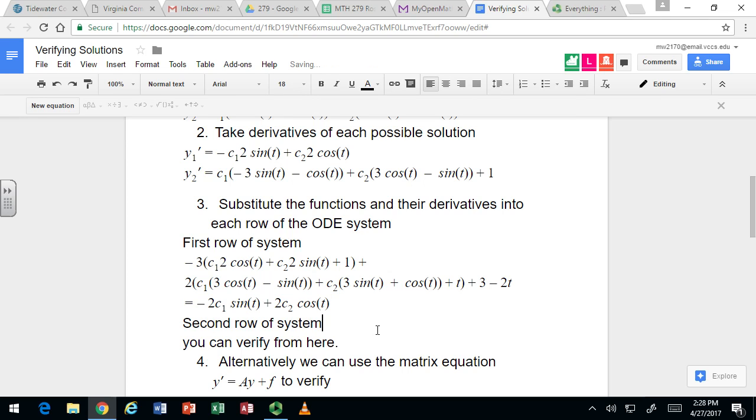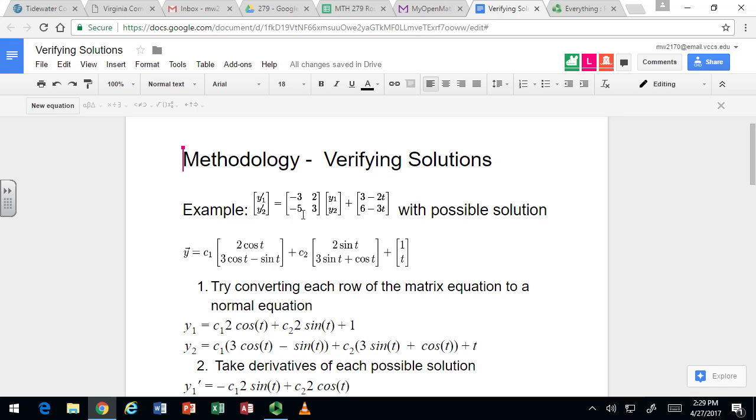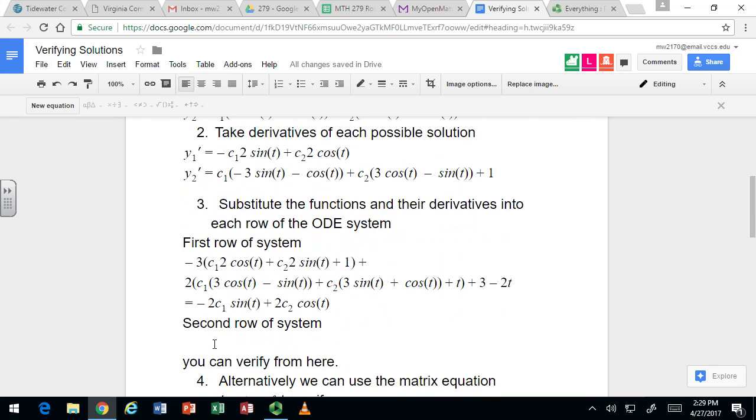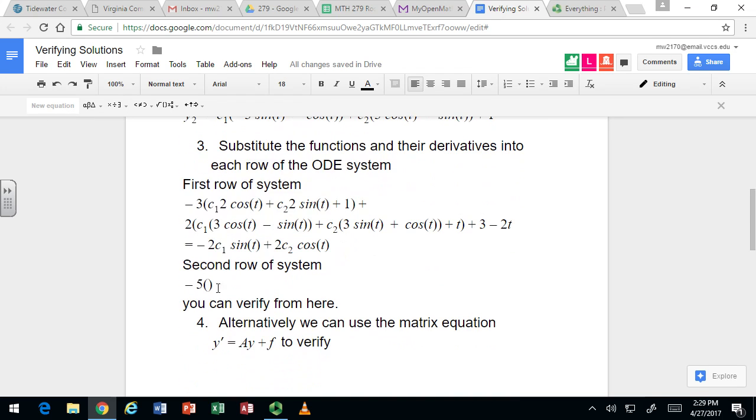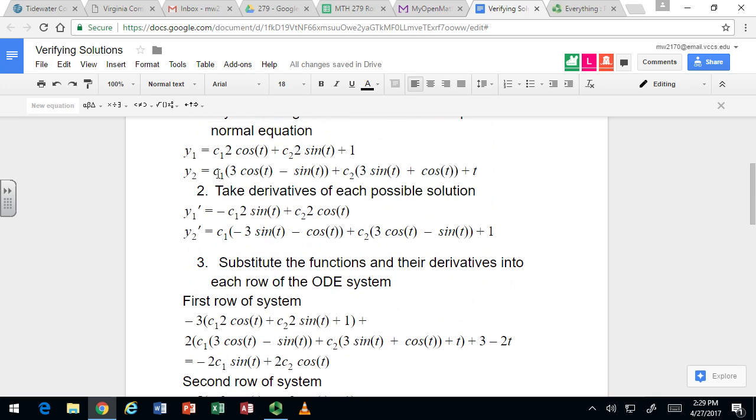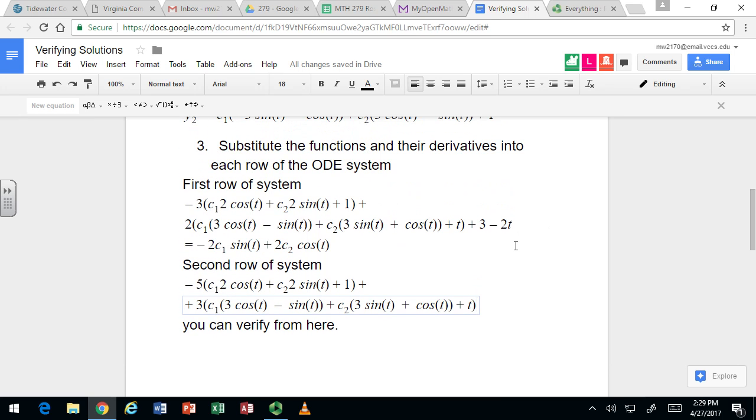All right, let's check the other row and then we should be good. So with the second row, we're going to take the second row of the matrix, negative 5 and 3, and we're going to multiply that with the solution vector here. So it'll be negative 5y1 plus 3y2. Negative 5 times y1 plus 3 times y2.